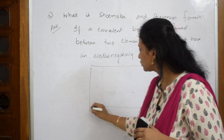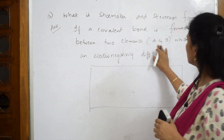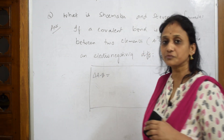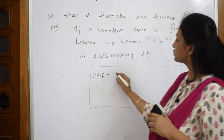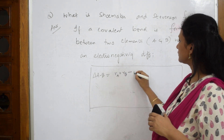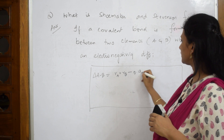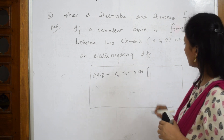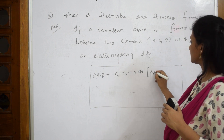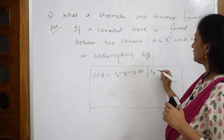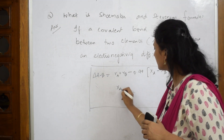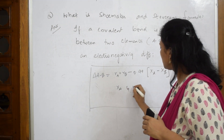So for elements A and B, the formula is: r(AB) = r_A + r_B − 0.99 × |x_A − x_B|, where x_A and x_B are the electronegativity values of A and B respectively.